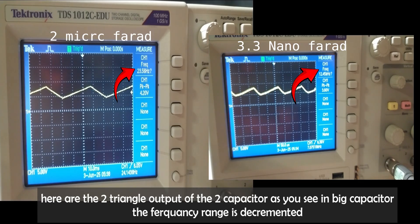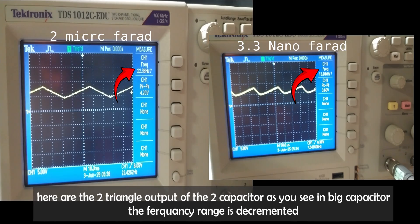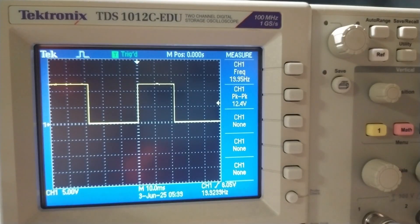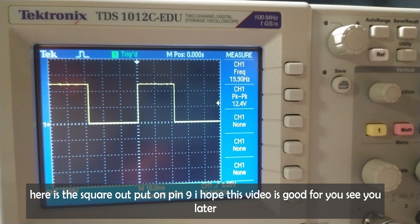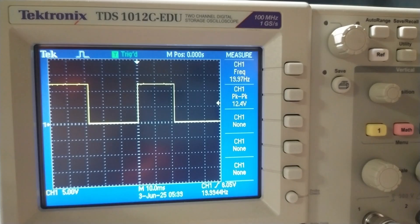Here are the two triangle outputs of the two capacitors. As you see, with the bigger capacitor, the frequency range decreases. Here is the square output on pin 9. I hope this video is good for you. See you later.